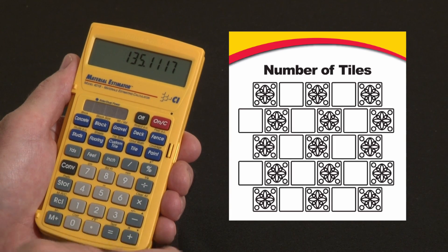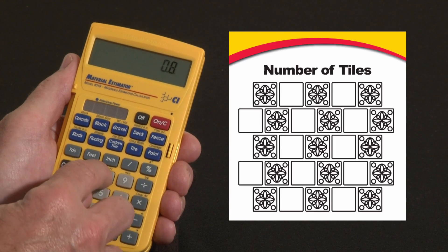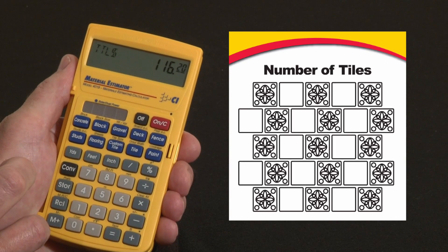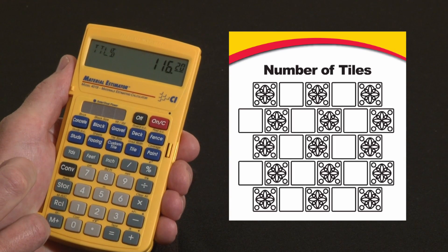Those tiles are 86 cents each, times 0.86. Convert to cost over the zero key, and that particular tile would cost me about $116.